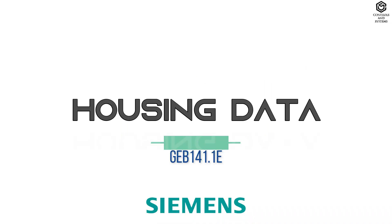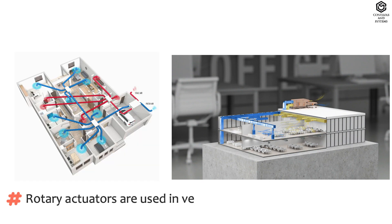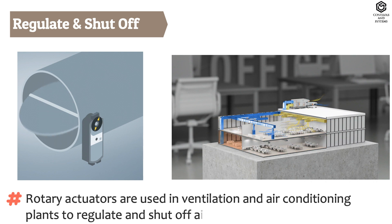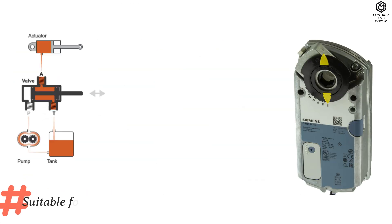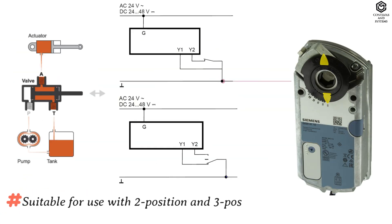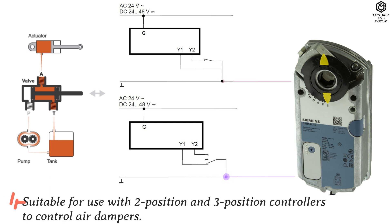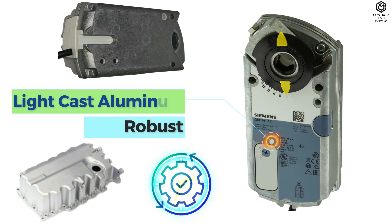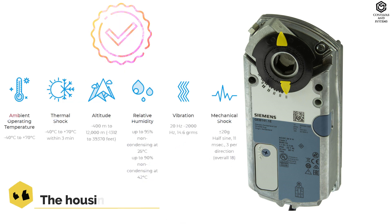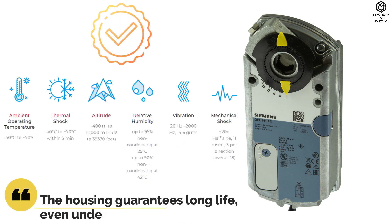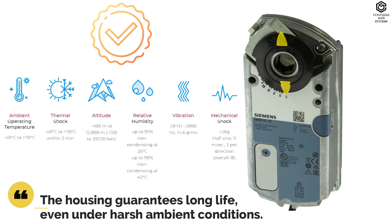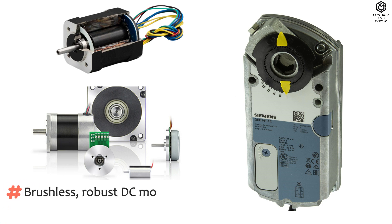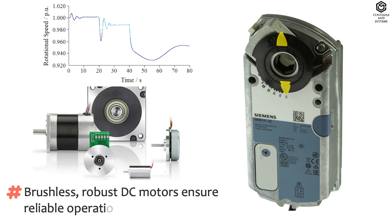Housing data: rotary actuators are used in ventilation and air conditioning plants to regulate and shut off air dampers, suitable for use with two-position and three-position controllers. The robust and light cast aluminium housing guarantees long life even under harsh ambient conditions. Brushless robust DC motors ensure reliable operation regardless of load.